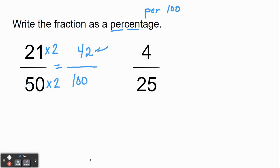Now we're writing a fraction, but that top number there gives us the percentage. So 21 50ths would be 42%. Let's do one more like that.